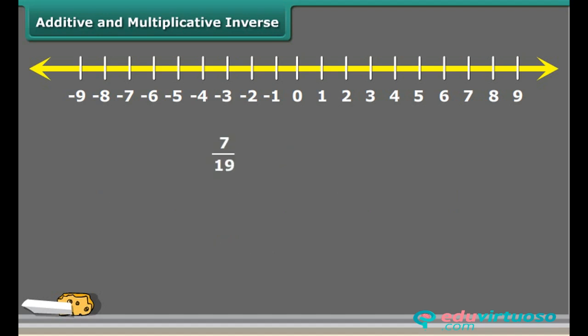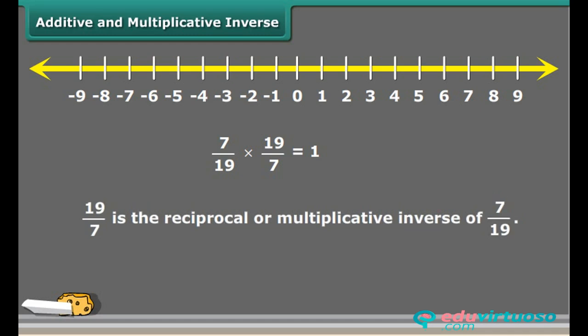Think: by which rational number would we multiply seven by 19 to get the product of one? Obviously it's 19 by 7, so as to get the product one. So we say that 19 by 7 is the reciprocal, or multiplicative inverse, of 7 by 19.